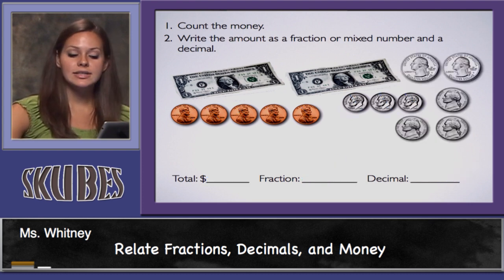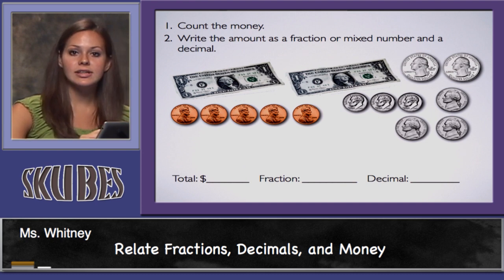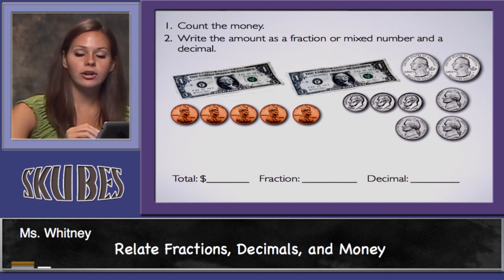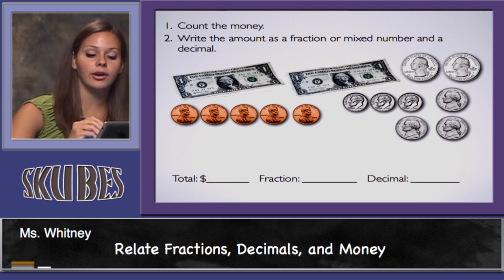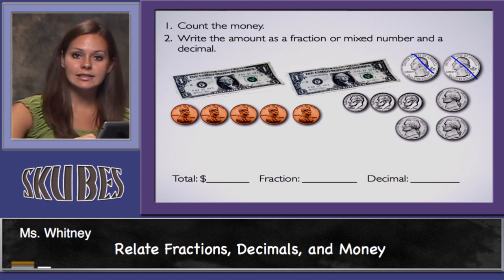Let's count this amount. I see I have two dollars, now let's count the change. Each quarter is 25 cents. I'll start with my biggest coin, which is the quarter: 25 cents, 50 cents.